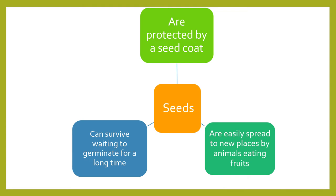Seeds have an advantage over spores for many reasons. First of all, they are protected by a tough seed coat, while spores are not. The seed coat is just like how you wear a jacket in winter to keep you warm — it protects the seed. Seeds can't germinate in cold weather, so sometimes they can wait a long time to germinate because they are protected by the seed coat, unlike spores.